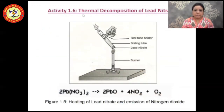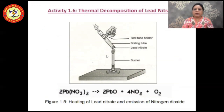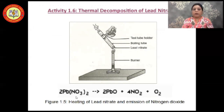Activity 1.6 in your textbook is the thermal decomposition of lead nitrate. As you can see in the picture, when lead nitrate is heated in a test tube, it decomposes to lead oxide and nitrogen dioxide gas is released. The molecular formula of lead nitrate is Pb(NO₃)₂ and lead oxide is PbO. Please remember these formulas — they are very important.